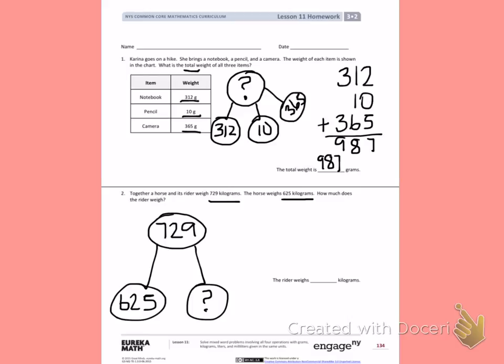I know the total and a part. I'm missing a part. When I'm missing a part, I want to subtract 729 minus 625. Complete that problem on your own, making sure to complete the sentence.